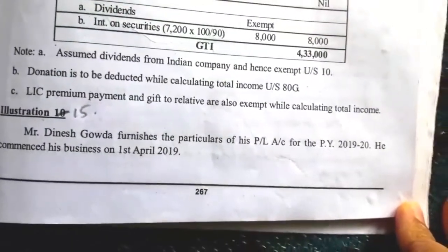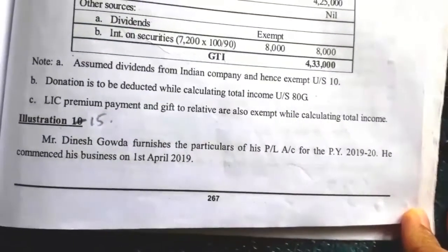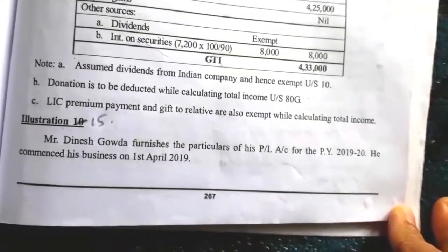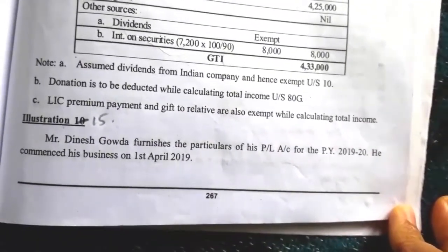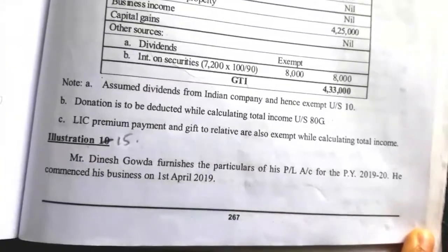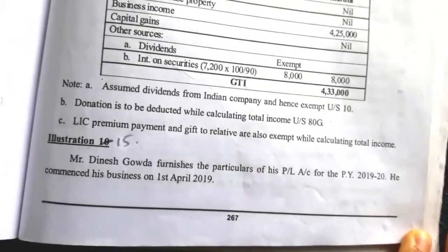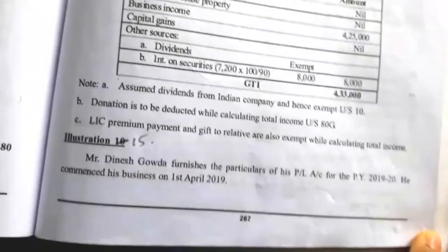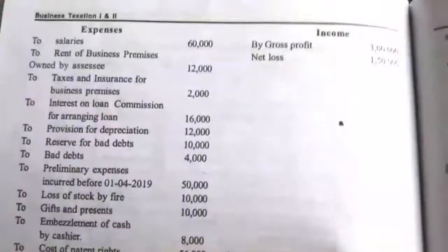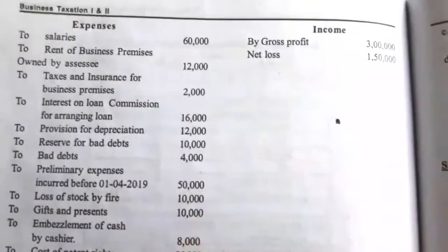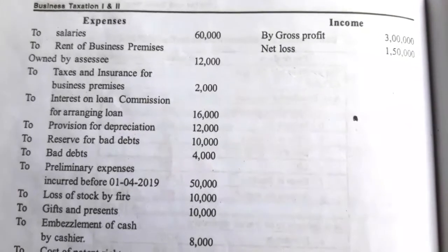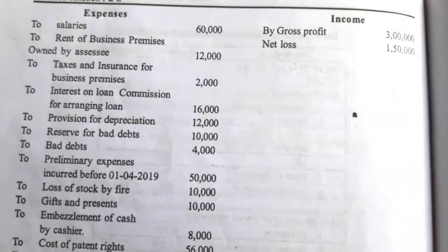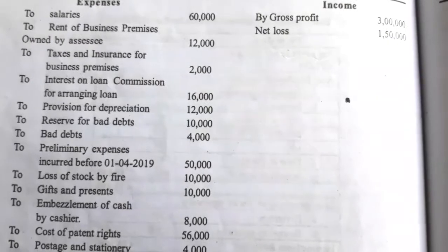Hello students, next we'll see Illustration number 15. Mr. Dinesh Kouda furnishes the particulars of his profit and loss account for the previous year 2019-20. He commenced his business on 1st April 2019. On the debit side: salaries rupees 60,000; rent of business premises owned by SSC 12,000; rent, tax and insurance for business premises 2,000.